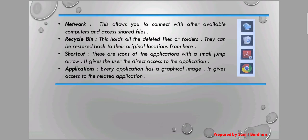Next is Recycle Bin. The Recycle Bin is mainly used to hold deleted files or folders. When we delete something, the file is moved to the Recycle Bin. Files can be restored back to their original location from here. Next is Shortcut — these are desktop icons of applications with a small jump arrow, which you can see on them.